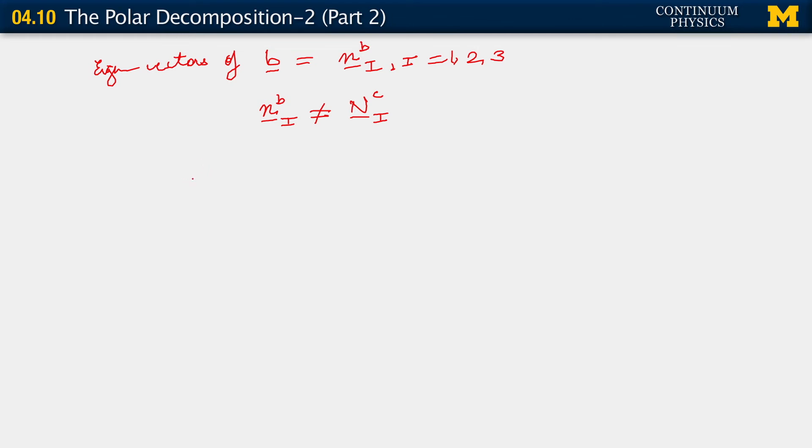And finally, so V admits a spectral decomposition, just like U does. And that spectral decomposition turns out to be sum over i equals 1, 2, 3 of lambda i, n i tensor little n i. And I'll put the B here to say that the eigenvectors of B and V are the same. Now observe that B, C, U, V—their eigenvalues are related. These are the same lambda i's that appear in the definition of the spectral decomposition of U. The eigenvectors, however, are different.